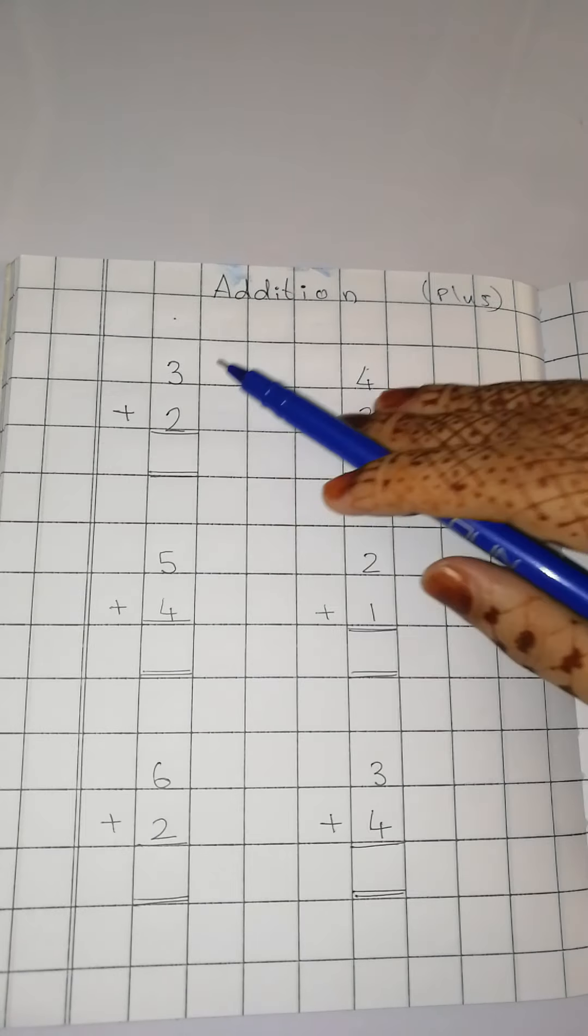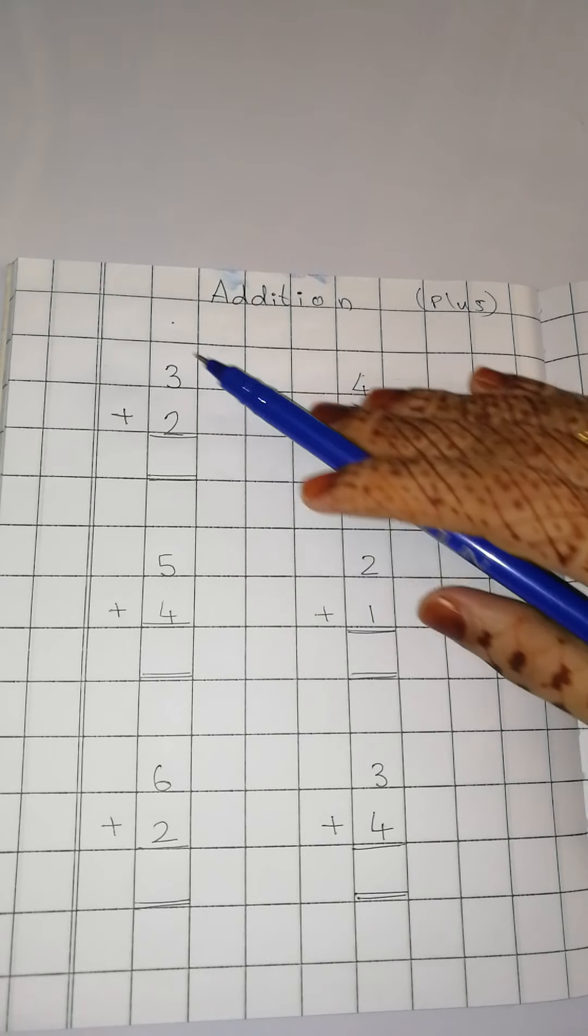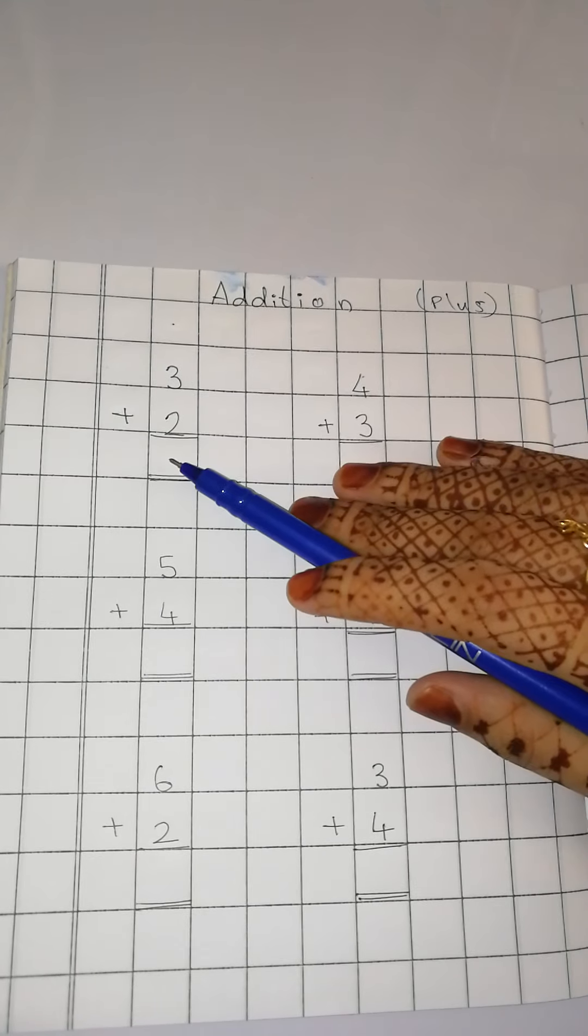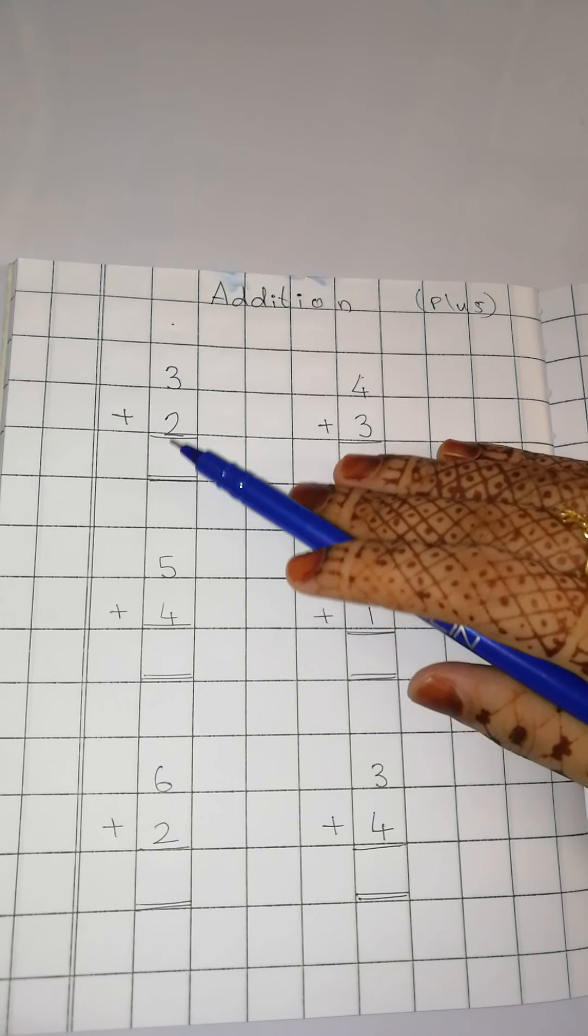Can you see this? These are called sums. Isay kya bolta hai? Sum karna. Sum matlab hum isay solve karegay. Okay. Addition.